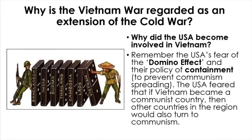The next slide focuses on why the Vietnam War is regarded as an extension of the Cold War. We want to look at why the USA became involved in Vietnam. Remember from our look at the origins of the Cold War that the USA had a big fear about the domino effect — that if one country becomes communist, it will have a ripple effect and other countries surrounding it would also be influenced by communism. America developed a foreign policy of containment, wanting to prevent the spread of communism. The USA feared that if Vietnam became communist, other countries in the region would also turn to communism.